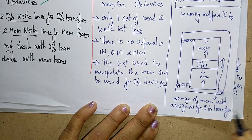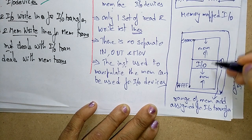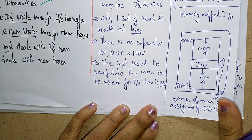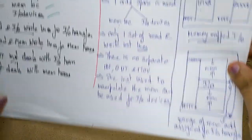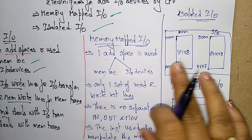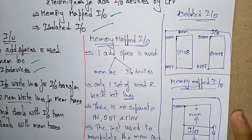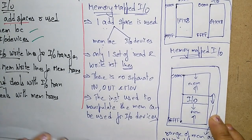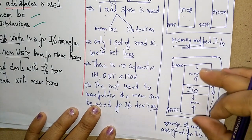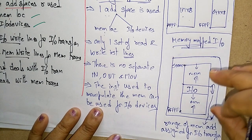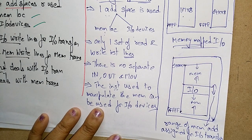So here you can see the difference: in isolated I/O you are using two separate address spaces — one for memory and one for I/O. Whereas in memory mapped I/O, you take one address space and that address space is allocated to both memory as well as I/O.